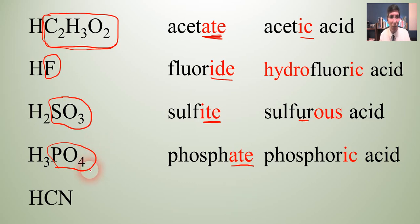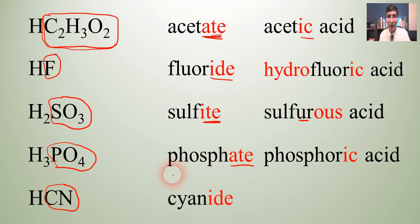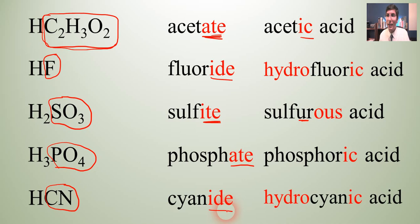Here's the last example: HCN. We're going to focus on just the anion, and its name is cyanide. We take the '-ide' ending off, put 'hydro' on the beginning and '-ic' on the end — because that's what you do if it's '-ide'. So it becomes hydrocyanic acid.